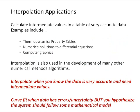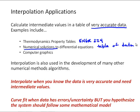Let's talk about some applications of interpolation. One application is to calculate intermediate values in a table of very accurate data. If we know the data doesn't have uncertainty in it, we just take the data as basically factual and use interpolation to find intermediate values. Examples of this are thermodynamic property tables that you'll encounter in thermodynamics, Engineering 224. When we solve differential equations numerically, the numerical solution is a table of data, and if we want intermediate values, we can use interpolation.